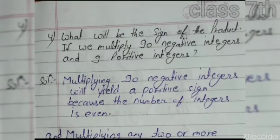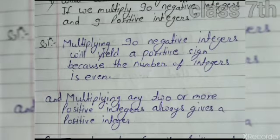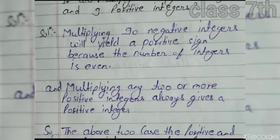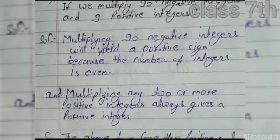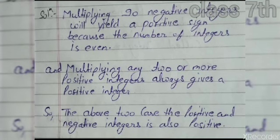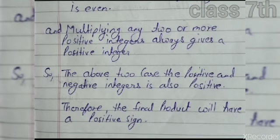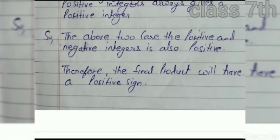Question number four: What will be the sign of the product if we multiply 90 negative integers and some positive integers? Multiplying 90 negative integers gives a positive sign because 90 is even. Multiplying two or more positive integers always gives a positive result. So in both cases the product is positive — the final answer has a positive sign.